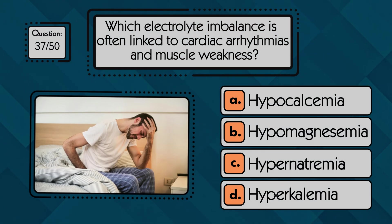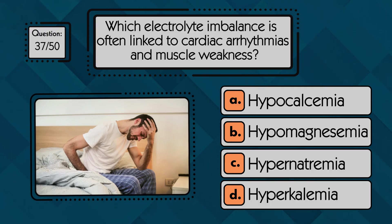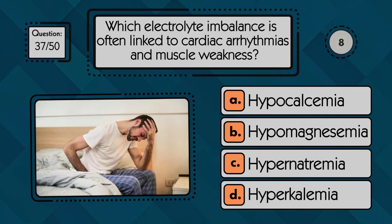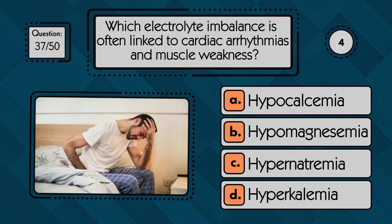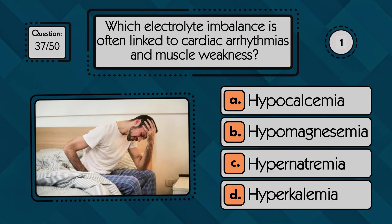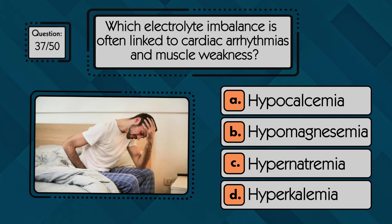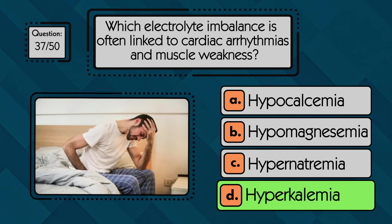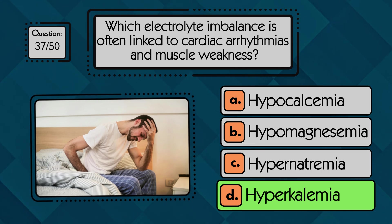Which electrolyte imbalance is often linked to cardiac arrhythmias and muscle weakness? Cardiac arrhythmias and muscle weakness are often linked to hyperkalemia, which is elevated potassium.